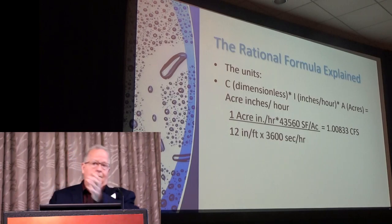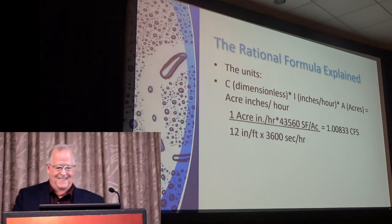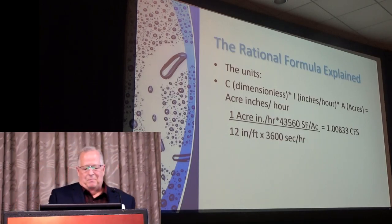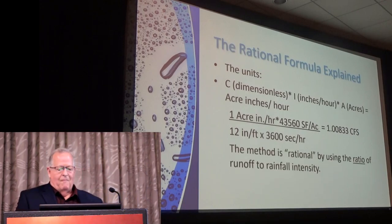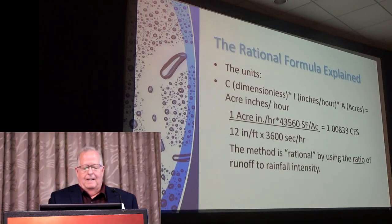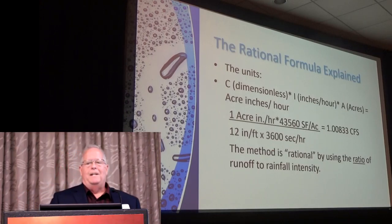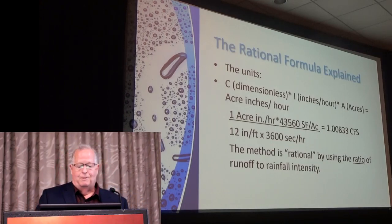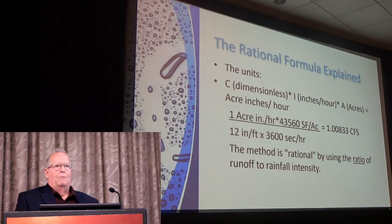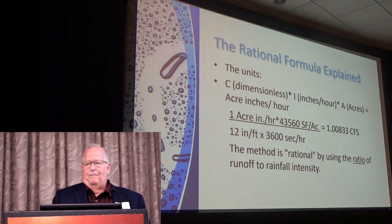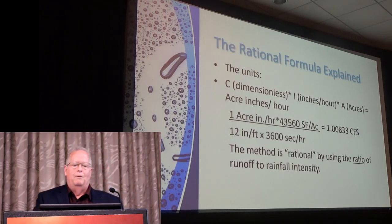Does anybody really want to put 1.008 in their calculations? We can have answers wrong to nine decimal places with computers, but we're not designing steel beams here. If you think your calculations are more accurate than 20 or 25 percent, you're kind of fooling yourself. The method is rational because it uses a ratio of runoff to rainfall.